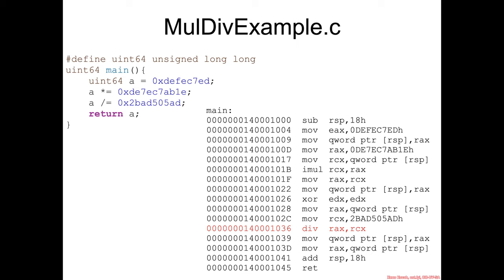So in order to avoid having our multiplies turned into shifts, let's go ahead and use some non-powers of 2. So we've got defected times detectable divided by too bad so sad.